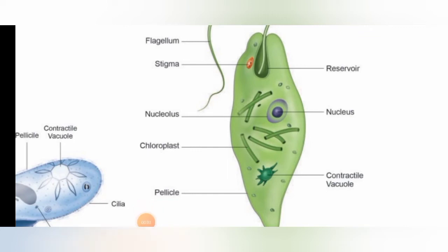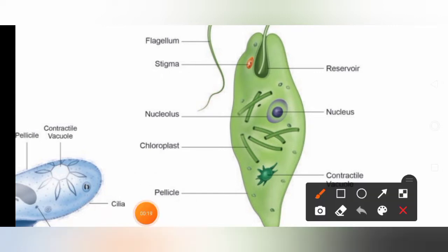The next unicellular organism is euglena. This is the diagrammatic representation of euglena. Euglena is a unicellular organism which moves with the help of a flagellum. This string-like structure is called a flagellum. The flagellum is the locomotory organ of euglena — with the help of this flagellum, euglena moves.